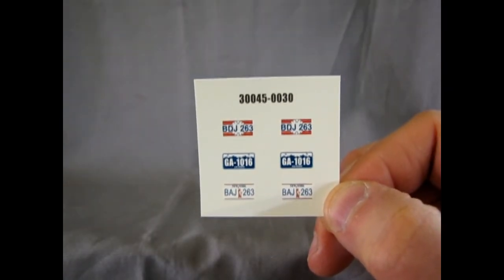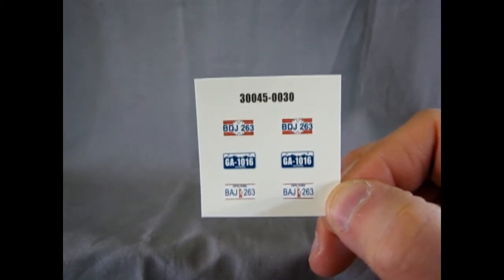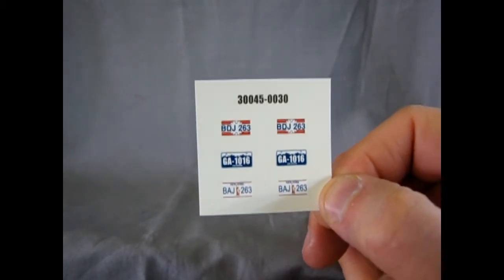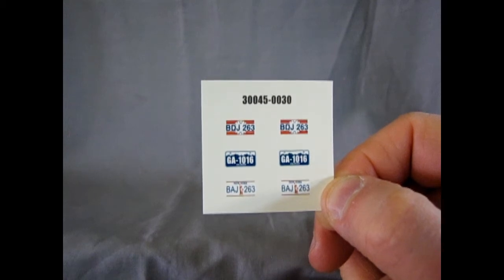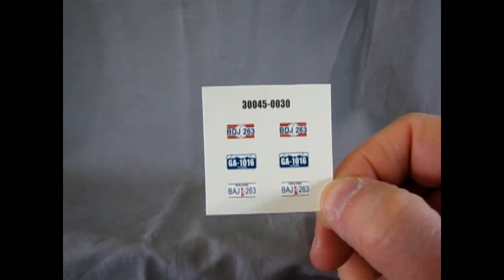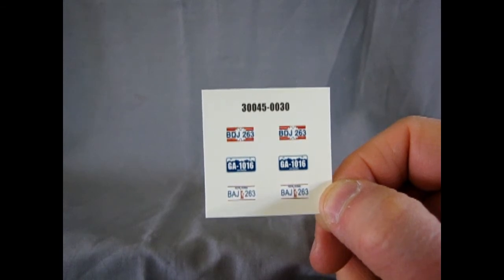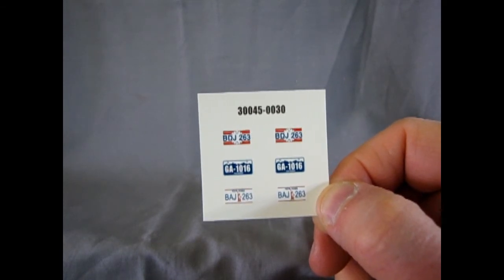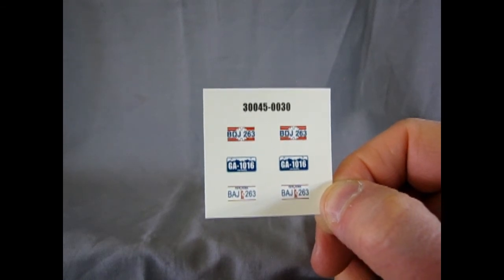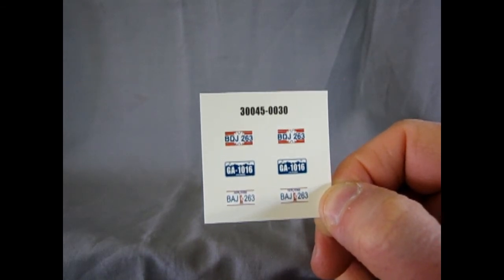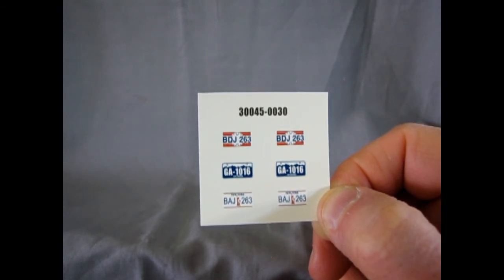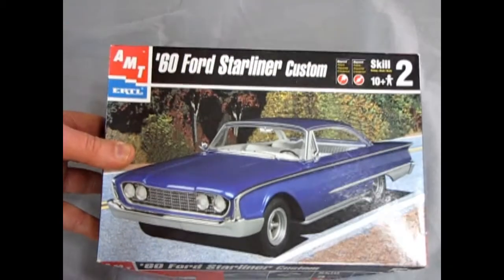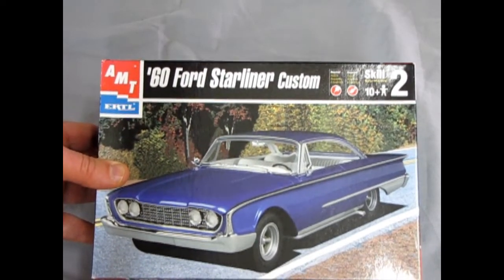And finally, we get these three sets of license plates. Now the top ones look like they're bicentennial ones, which is a little bit strange considering that this is a 1960 and the bicentennial was in 1976 and yeah, I'm a Canadian and I know that. But anyway, so then you could always build a car that's like 16 years older and put these on it, I guess. Then there are some Colorado plates, the GA-1016 and New York ones, B-A-J-2-6-3, so this is where you get any kit. And that will conclude our review of the AMT 1960 Ford Starliner Custom.